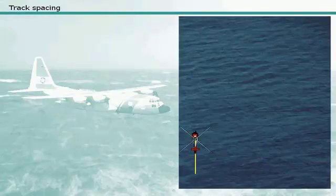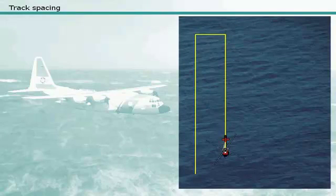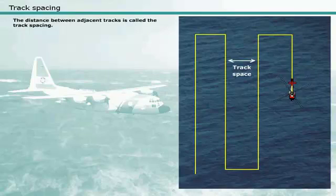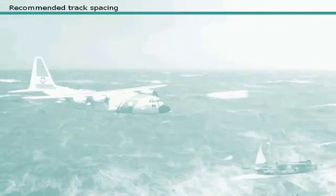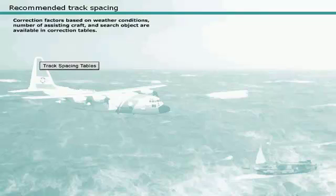Most search patterns consist of parallel tracks or sweeps, covering a rectangular area with a certain width and length. The distance between adjacent tracks is called track spacing. Recommended uncorrected track spacings for merchant vessels are provided in tables. Correction factors based on weather conditions, number of assisting craft, and search object are available in correction tables.